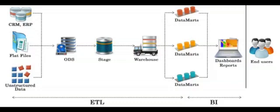From ODS to stage, we apply all the cleansing rules and load the data into the staging area. Then from stage to warehouse, we apply transformation logic and load the data into the data warehouse, which is part of dimensional modeling — that is, in the form of dimensions and facts.